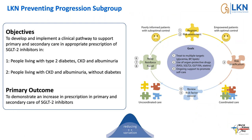As part of the London Kidney Network's preventing progression workstream, a subgroup focused on clinical pathways around these medications. The thought process was: can we use SGLT2 inhibitors with this evidence base to lever improvement across the entire CKD pathway? The objectives were to develop and implement a clinical pathway to support appropriate prescription of SGLT2 inhibitors across primary and secondary care for those with type 2 diabetes and CKD, and those with CKD and albuminuria but without type 2 diabetes.